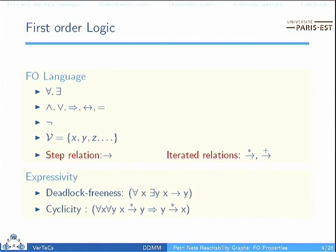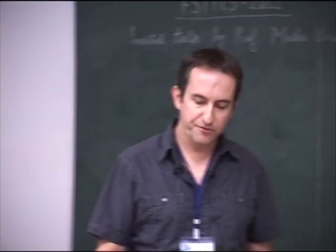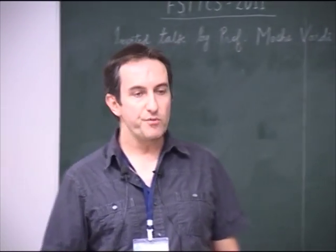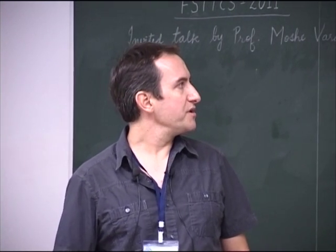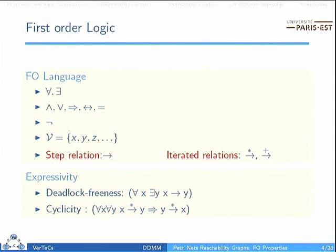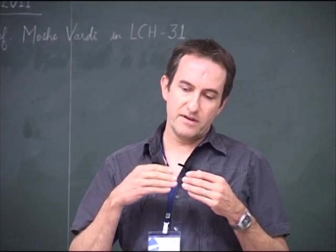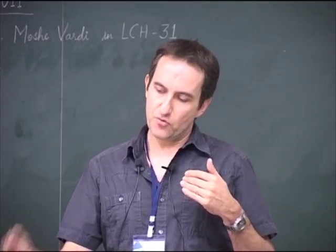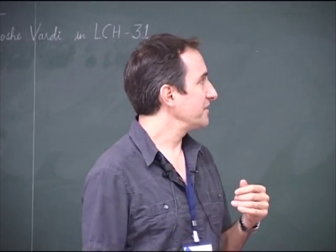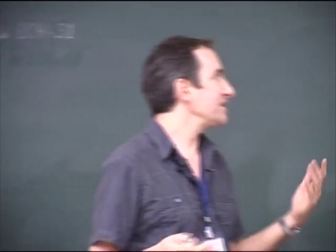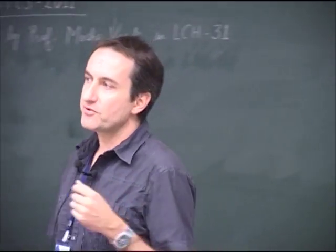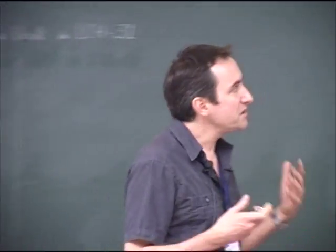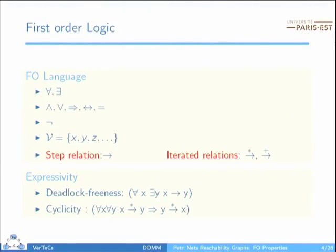Among the things we can express easily — these are only examples — we can express deadlock freeness, meaning that from any marking of the net we will always be able to follow a transition. Using the iterated relation, we may also express cyclicity, meaning that if a marking is reachable from another, then you may reach the first one from the second. These two questions are decidable for PetriNets, and that's the kind of thing we would like to solve in general using this logic.